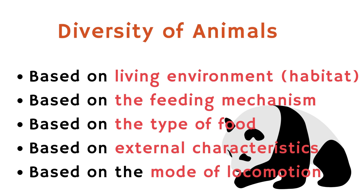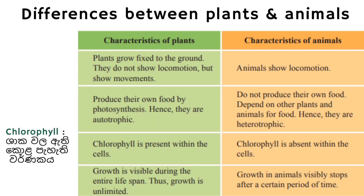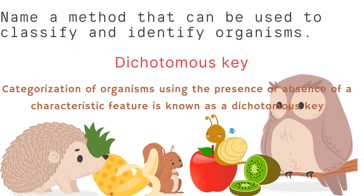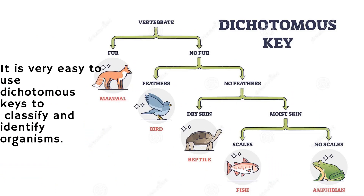When we discuss the diversity of animals, we can classify them based on living environment, feeding mechanism, type of food, external characteristics, and mode of locomotion. Finally, we can differentiate between plants and animals using a table based on what we learned in this lesson. Remember, chlorophyll is the green color pigment in plants which helps in photosynthesis. A method that can be used to classify and identify organisms is the dichotomous key. Categorization of organisms using the presence or absence of a characteristic feature is known as a dichotomous key, and it is very easy to use to classify and identify organisms.